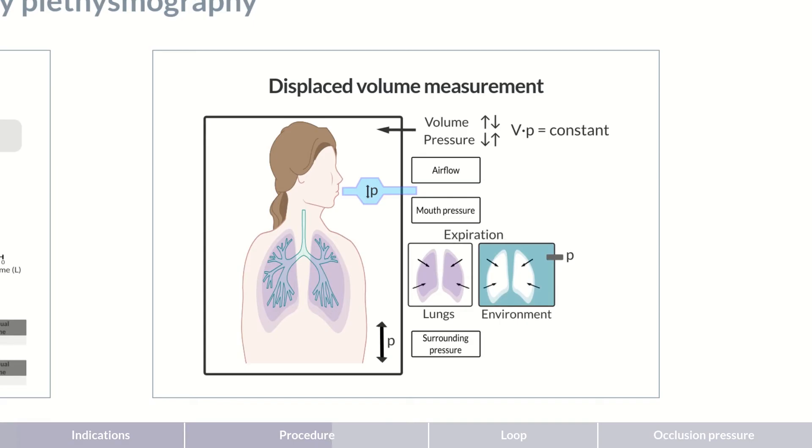During expiration, the lungs, and therefore the thorax, constrict again. The space available to the surrounding air enlarges. The air expands into this additional space and its volume increases by the same amount through which the volume of the thorax decreases. The pressure in the cabin sinks.